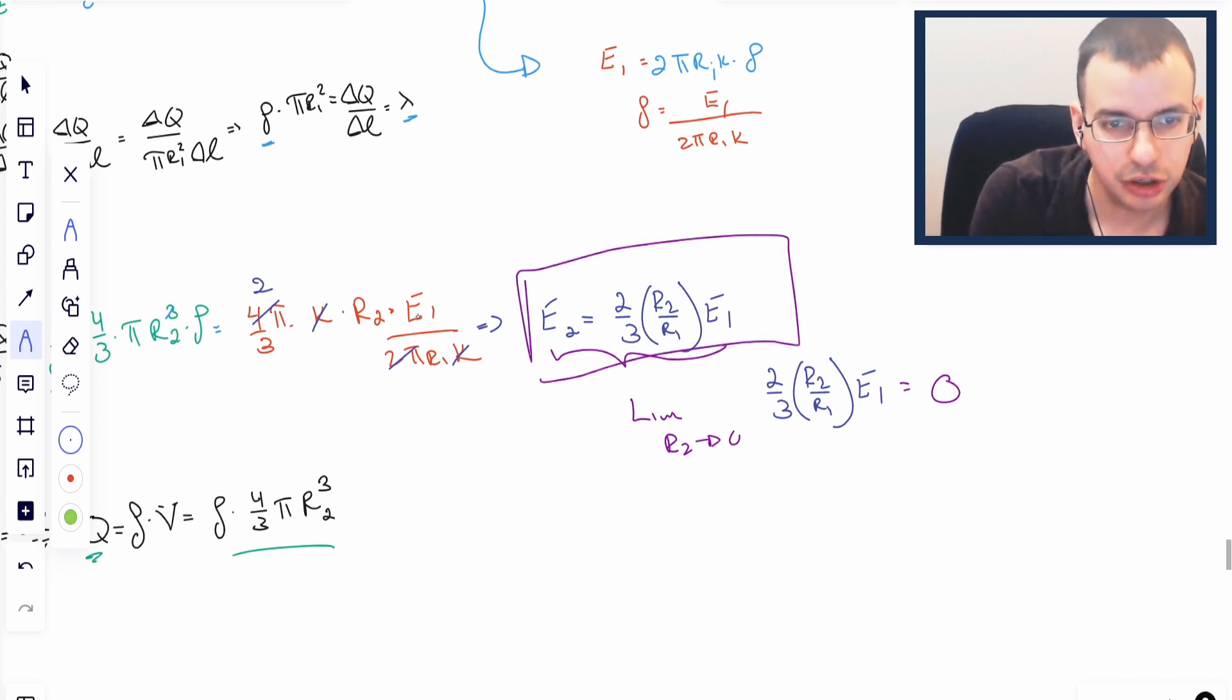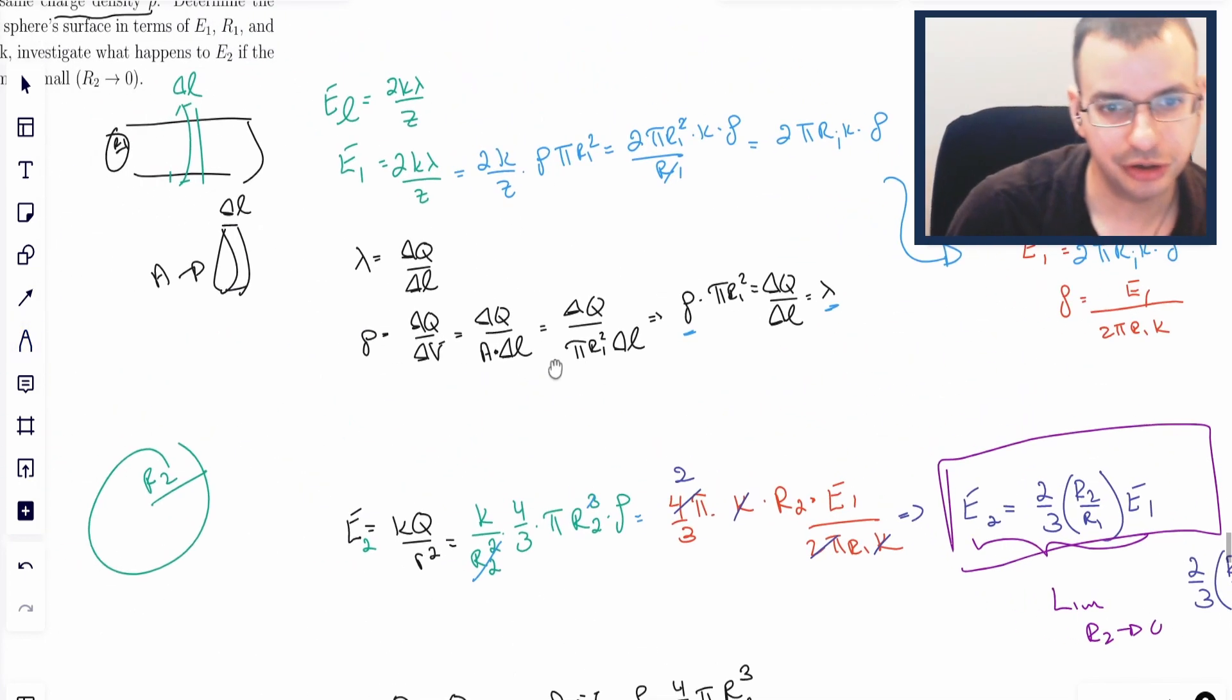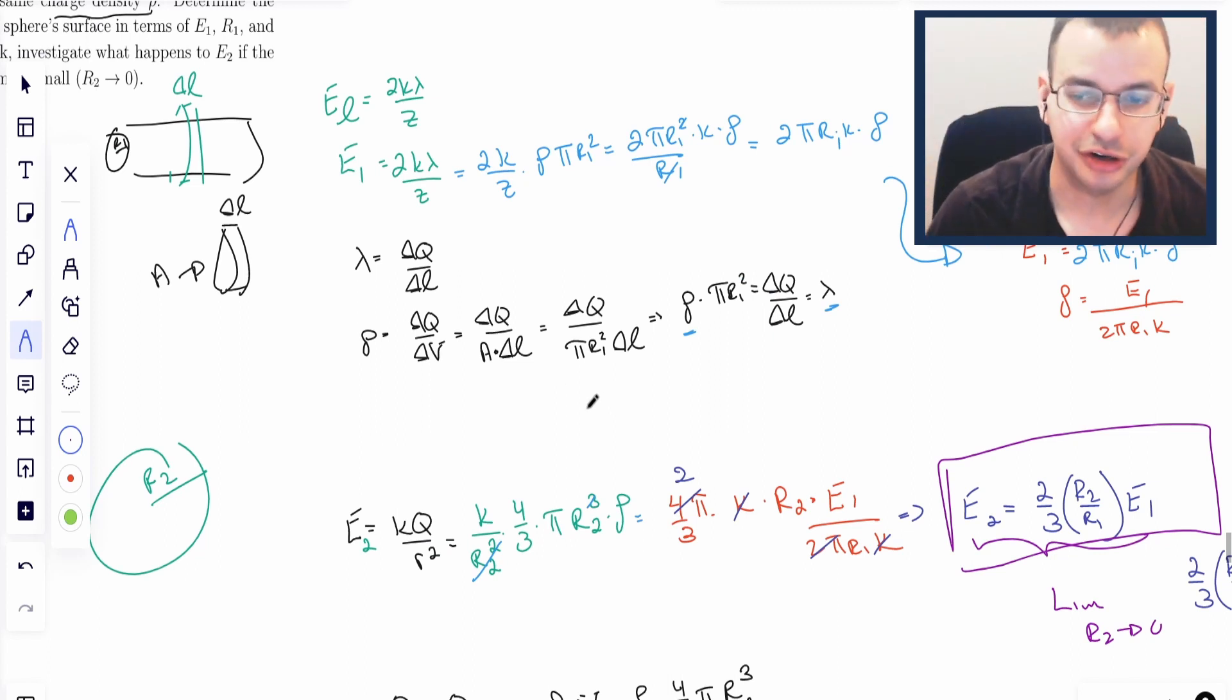So this is what I would have for E2, in terms of R1, R2, and E1. Where E1 is the electric field of the cylinder, R1 is the radius of the cylinder, and R2 is the radius of our sphere.